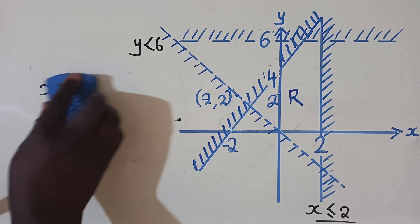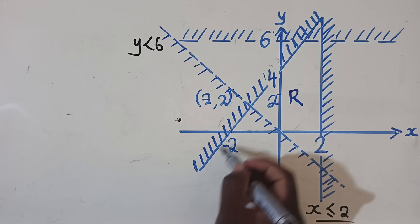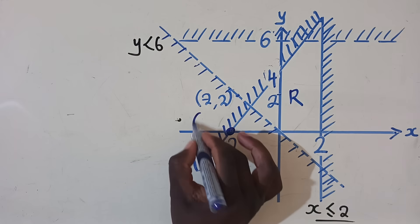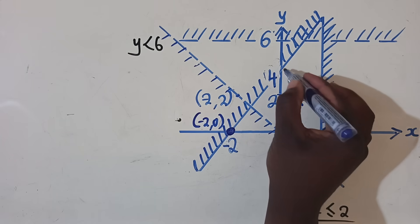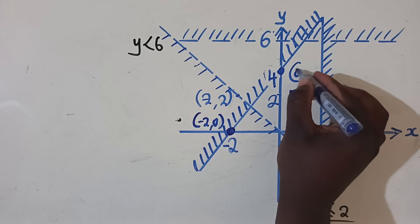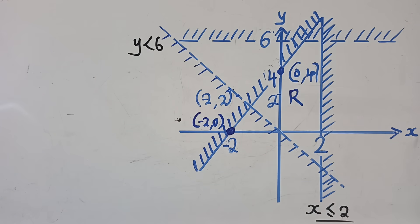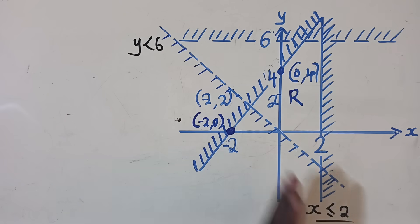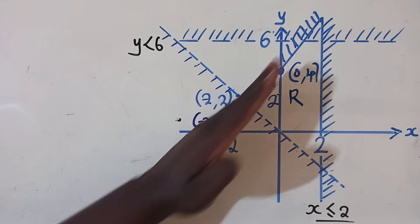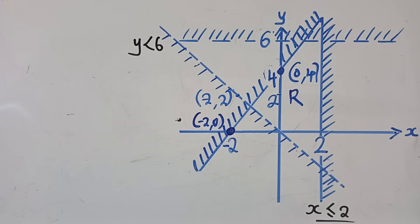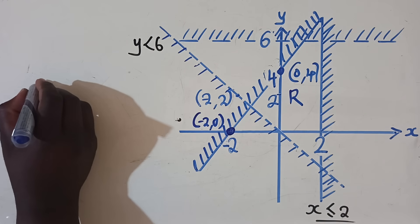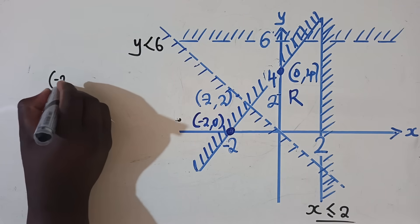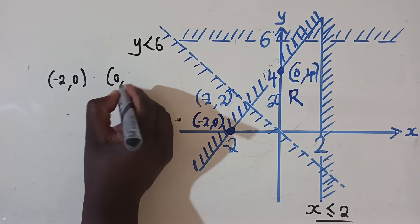The next inequality has a slope, so we need to identify the coordinates. It's passing at negative 2 comma 0, and here at 0 comma 4. We pick coordinates when the line has a slope — it's slanted, not straight like the previous ones. So the coordinates are negative 2 comma 0, and 0 comma 4.